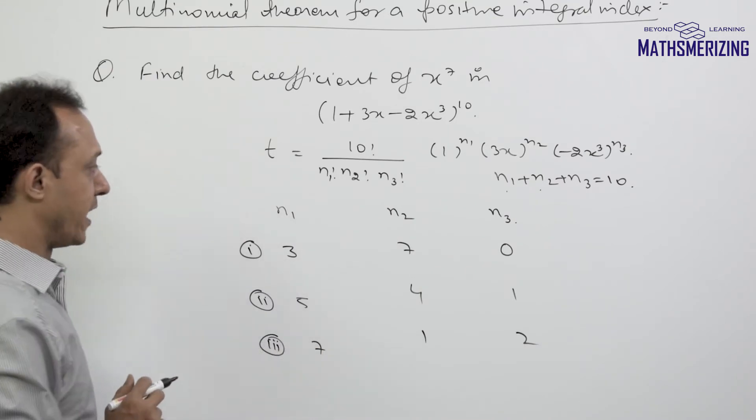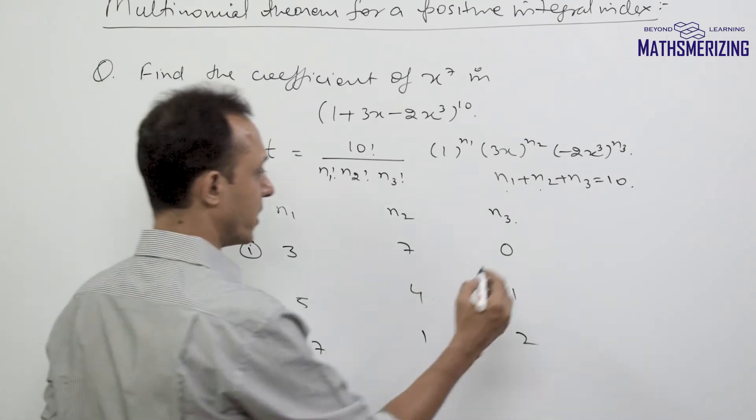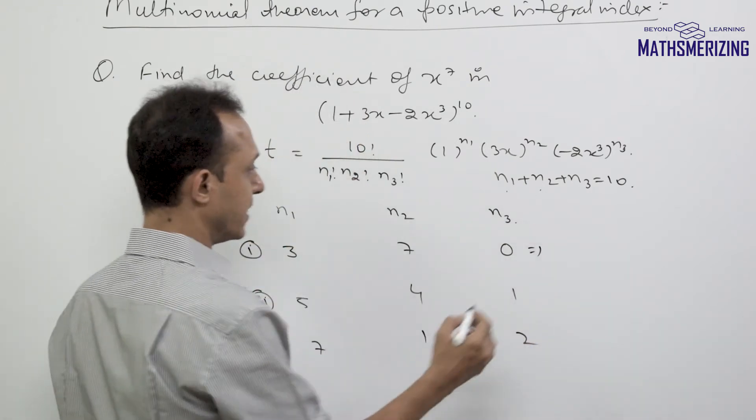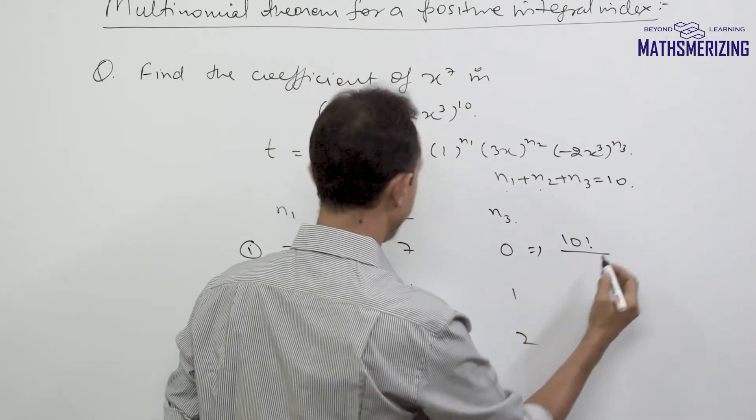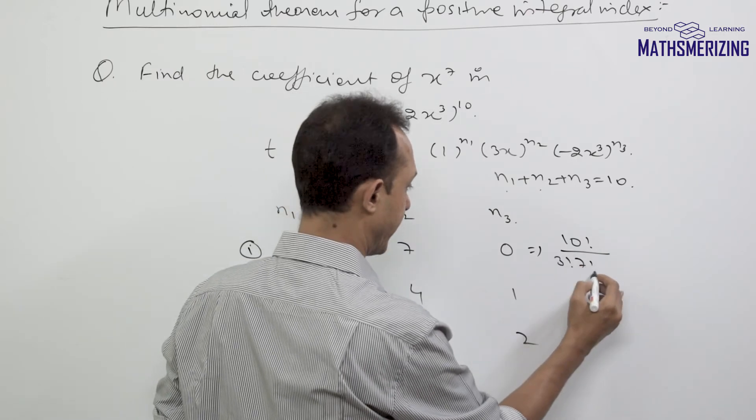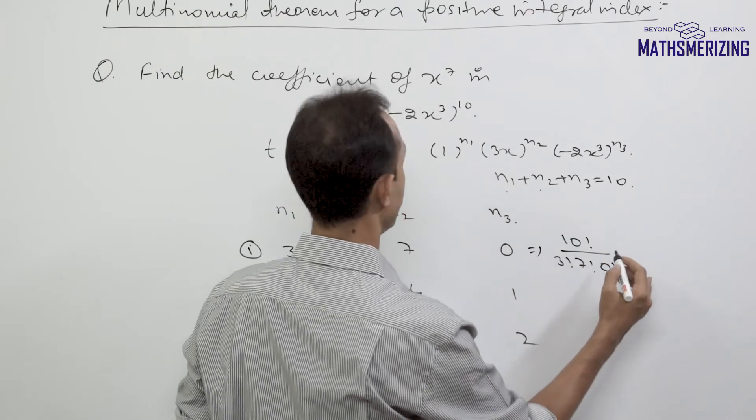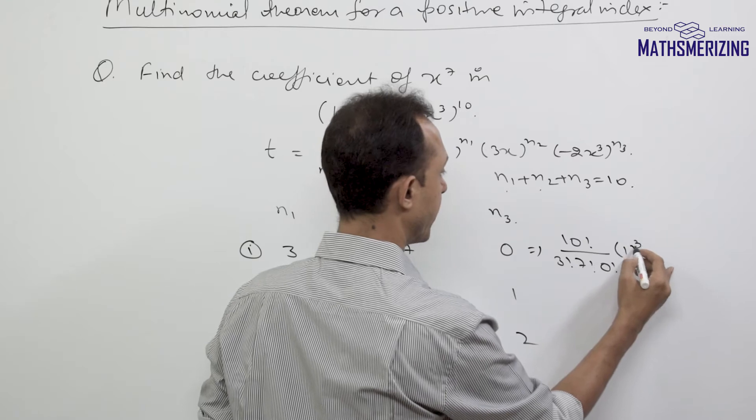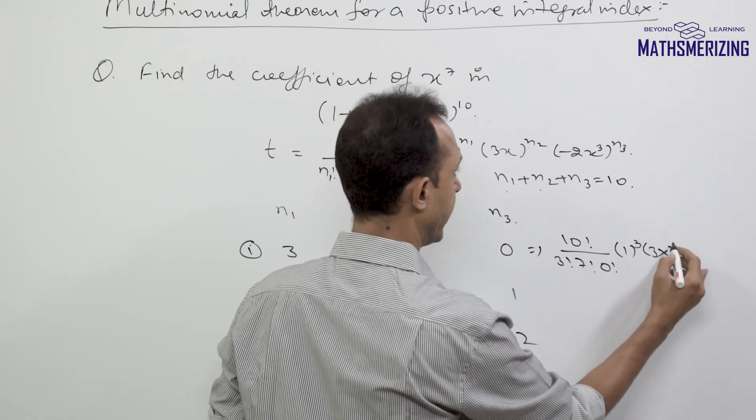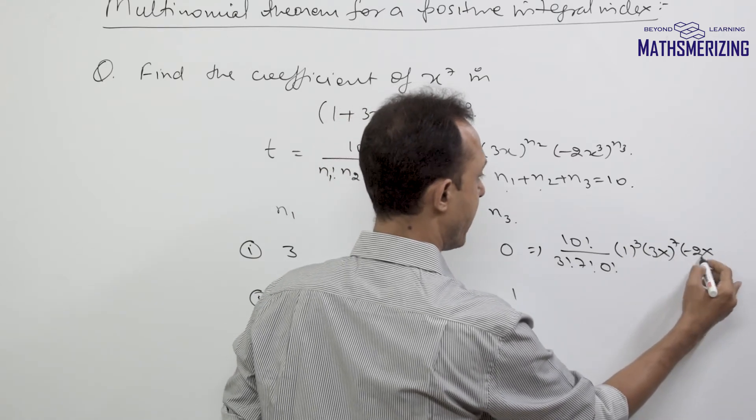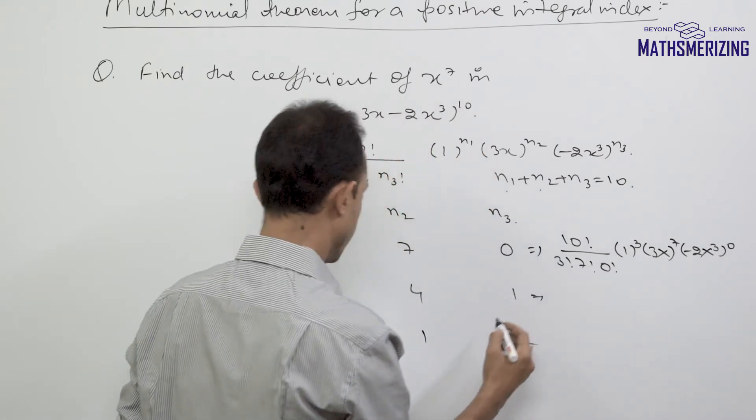So I'll write this term as 10!/(3! 7! 0!) times 1³ times (3x)^7 times (-2x³)^0.